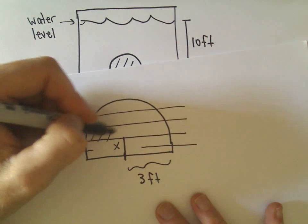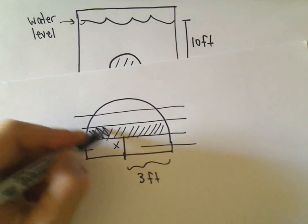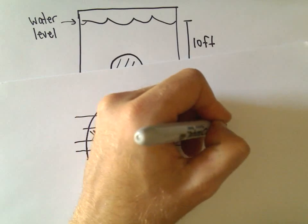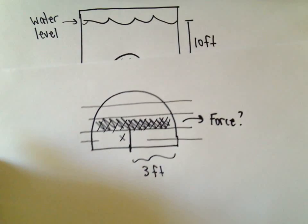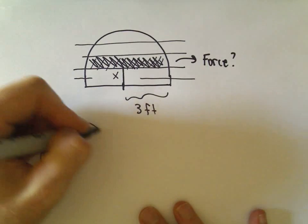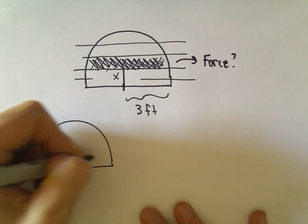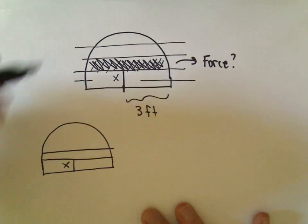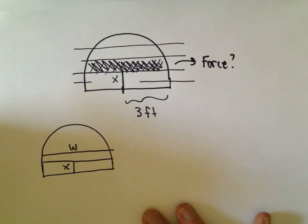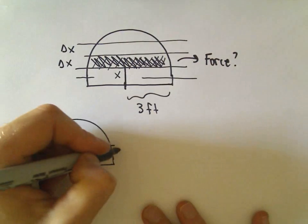I want to look at one of those little slices — maybe this will be the i-th slice of the gate. I want to figure out what's the force on that little i-th slice. I've gone up x units. If you think about this little slice, it's got a certain width associated with it — let's call it w. All of these little slices have a height of delta x.